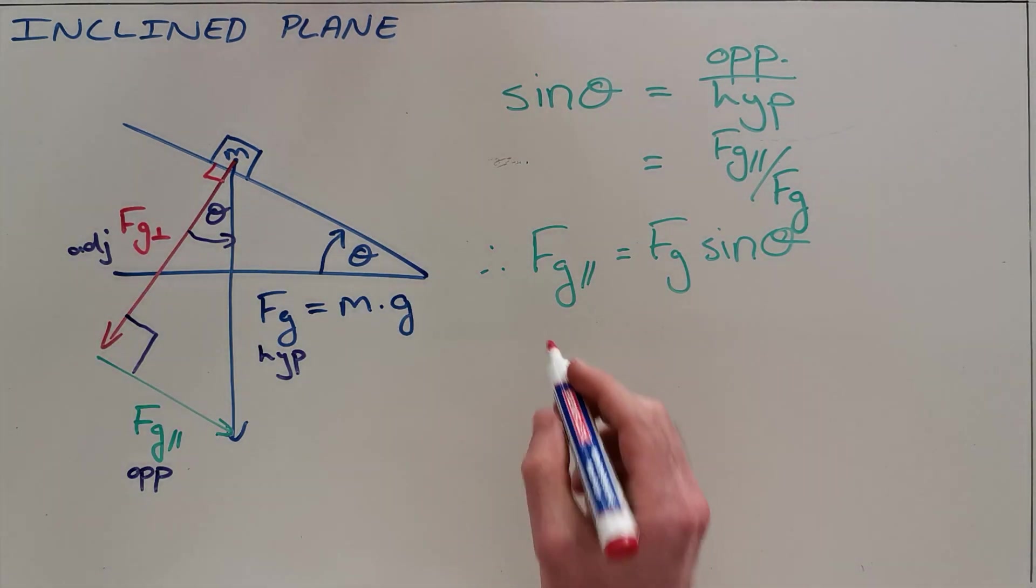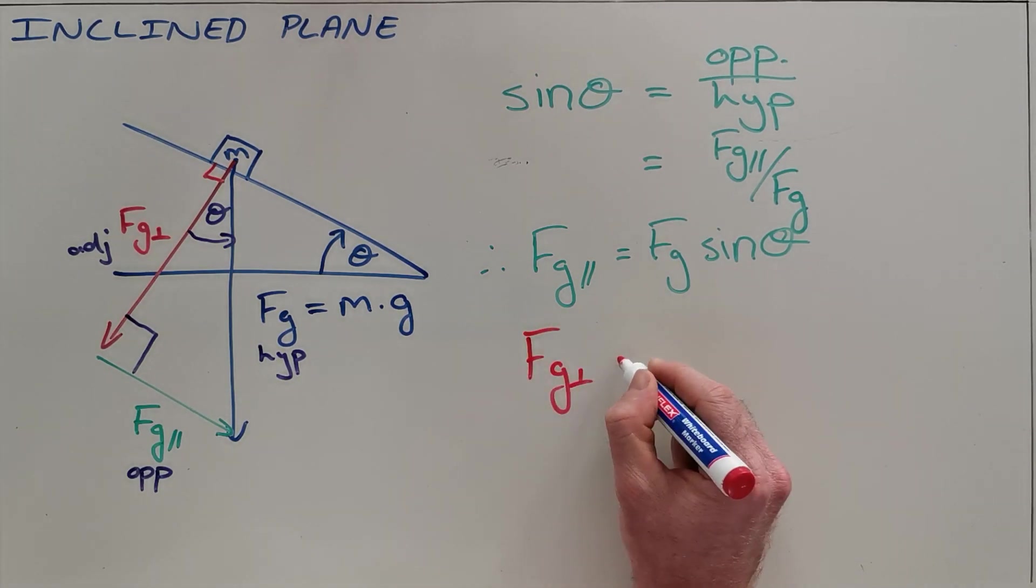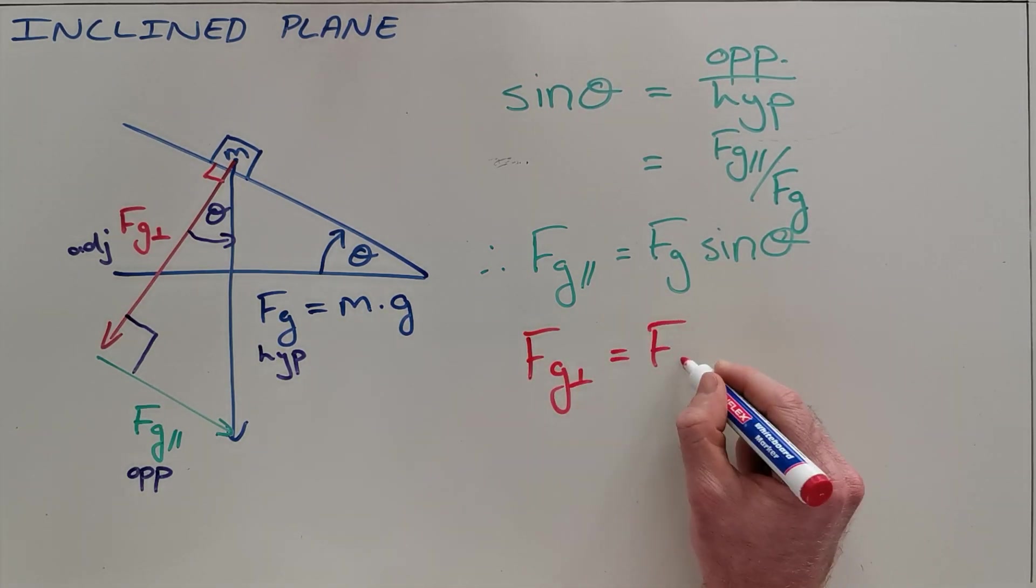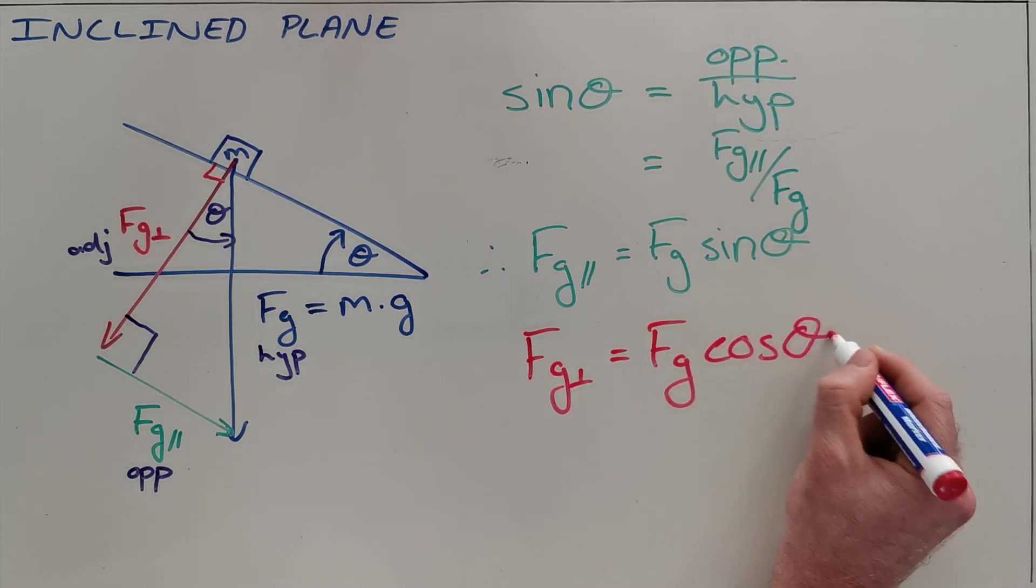Similarly we can do a calculation to find that the perpendicular component of the gravitational force is always equal to Fg cos of theta.